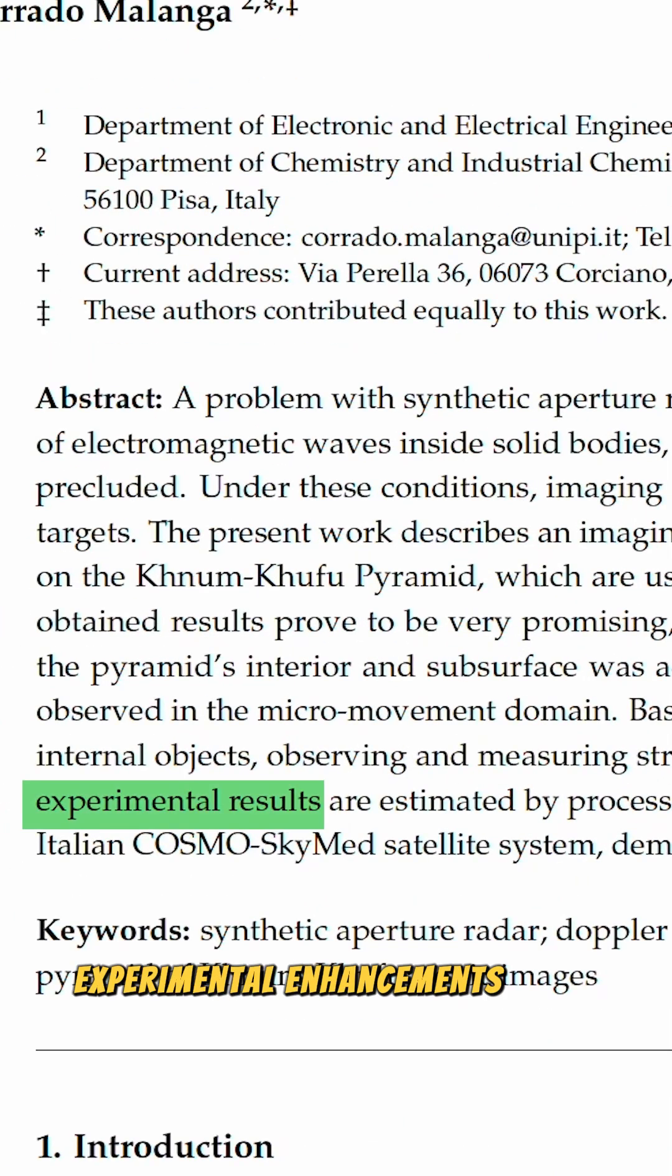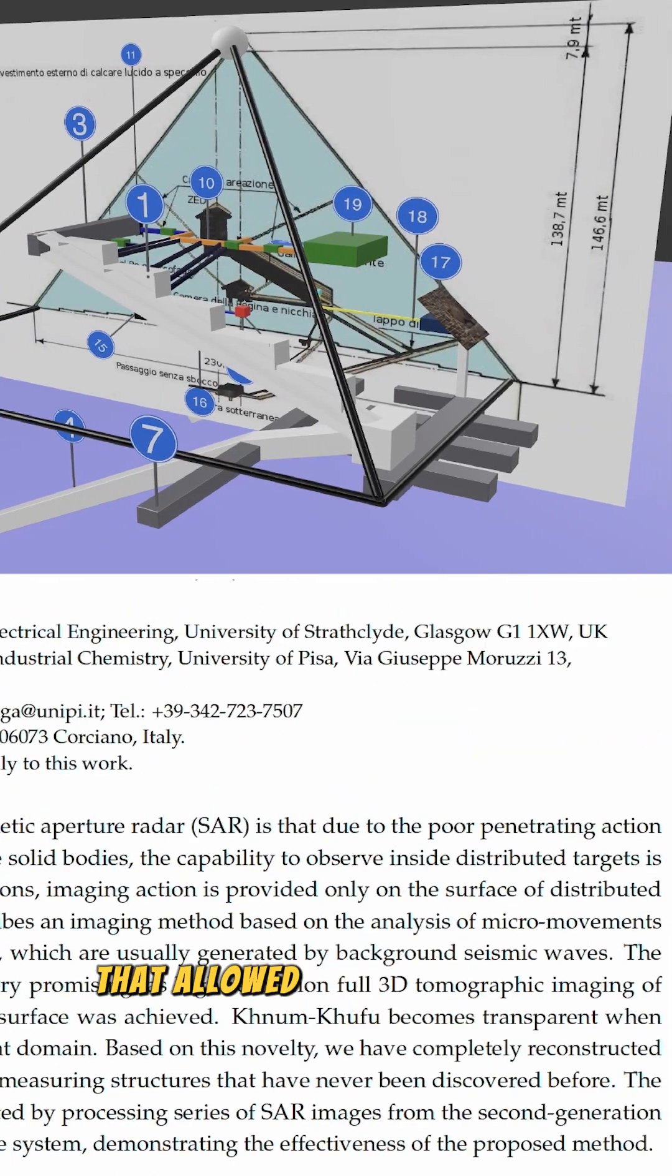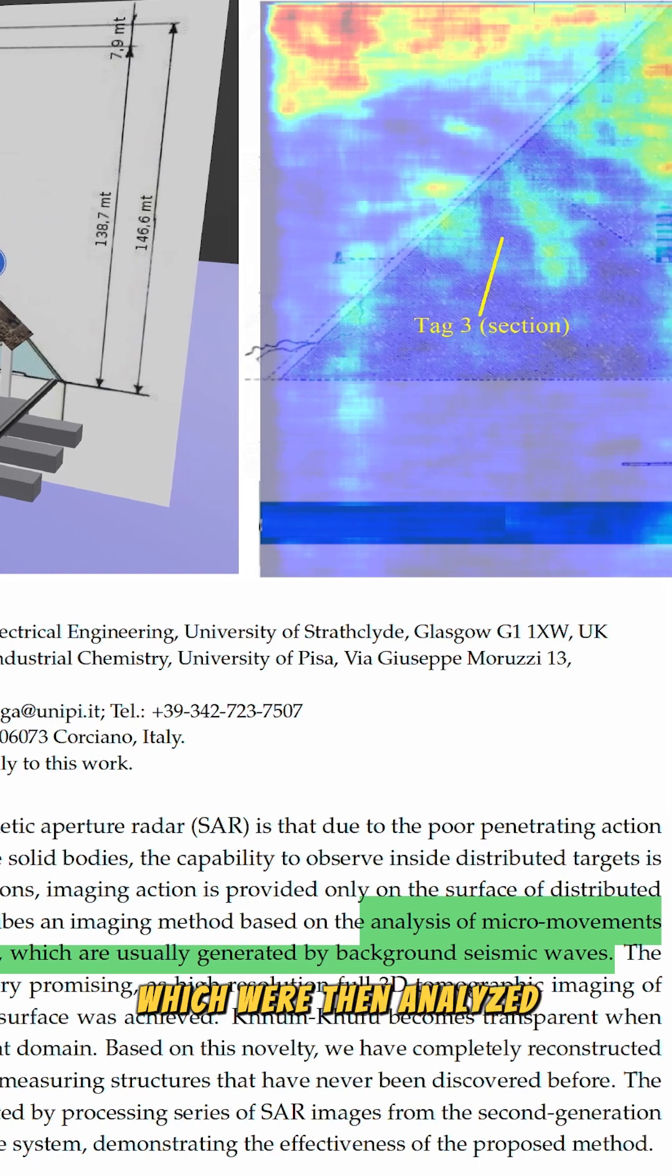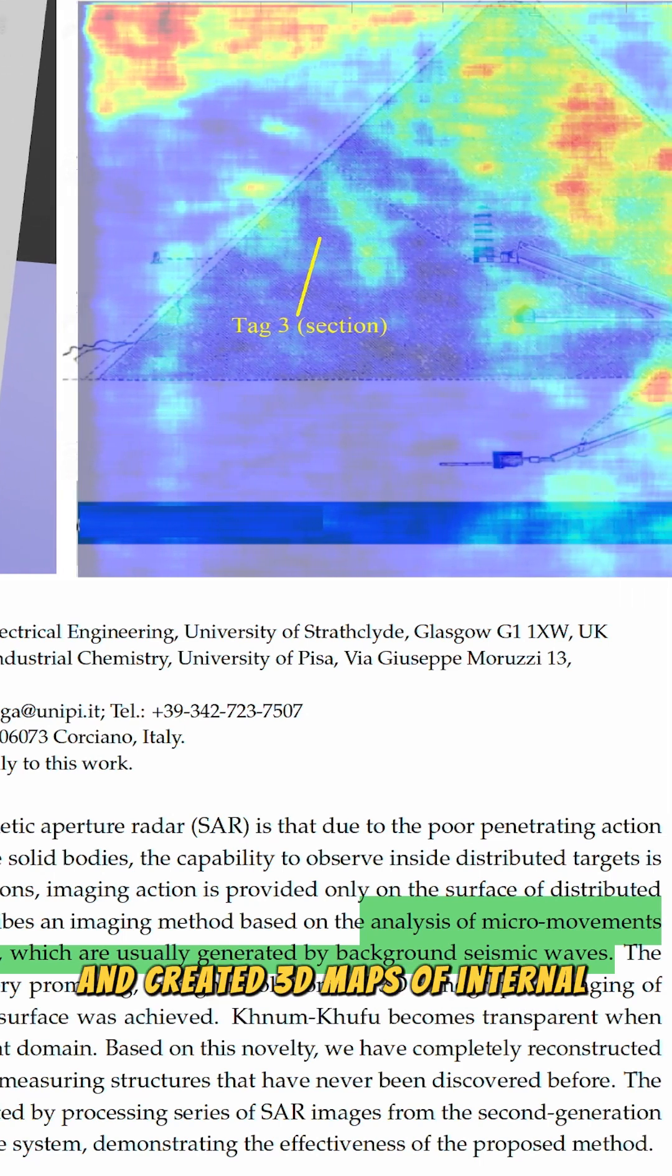describes experimental enhancements made to the technology which they used on the Great Pyramid that allowed them to measure micro-movements of background seismic activity, which were then analyzed and created 3D maps of internal structures.